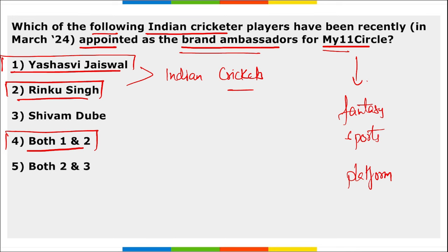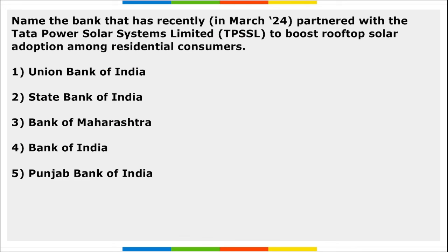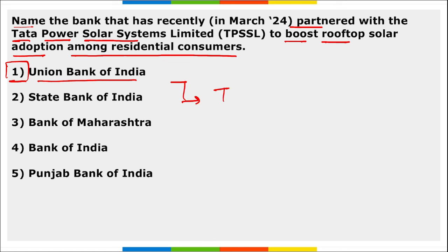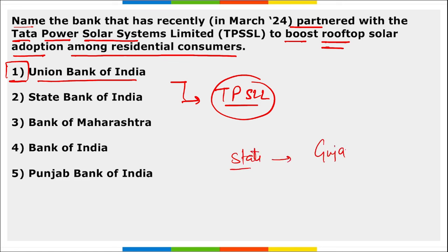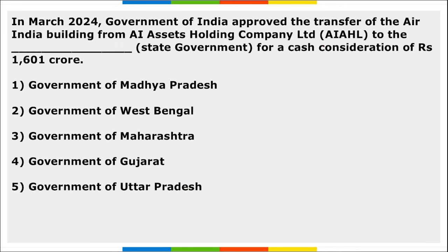Union Bank of India recently partnered with Tata Power Solar Systems Limited to boost rooftop solar adoption among residential consumers. Gujarat is the state performing best in terms of solar rooftop systems.